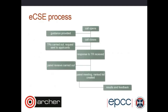Once the call opens, we can provide guidance on how to fill in particular sections. After the call closes, proposals go out for a technical review, where a reviewer assesses whether what you plan to do is feasible and whether the code performance has been assessed sufficiently. We receive responses from the technical review and often send out a request for further information if the technical reviewer felt information was lacking. All this information then goes to a panel of independent scientists who assess the proposals, agree a ranked list of projects to be funded, and then we send out the results and feedback.